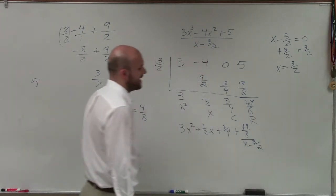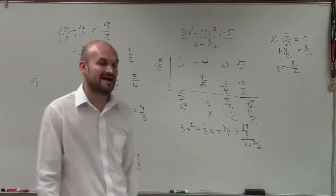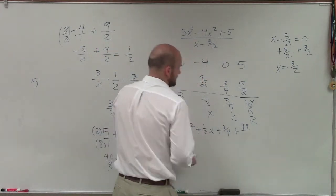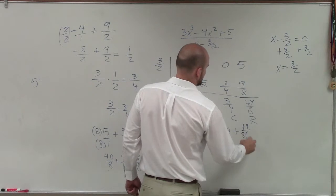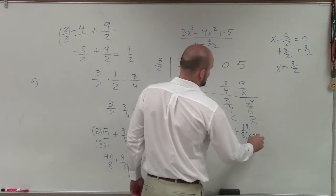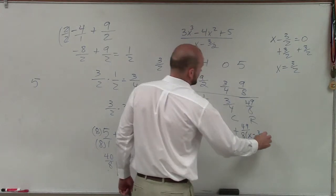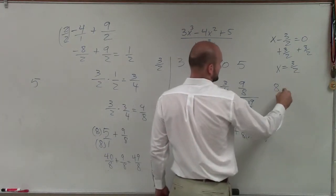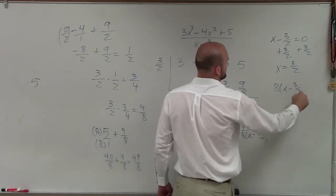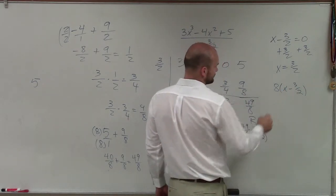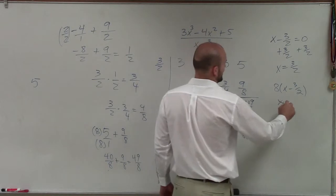Now we don't really want to have a fraction and another fraction. So what I can do is I can just rewrite this as 8 times (x - 3/2). And let's distribute that, 8 times x - 3/2. So therefore that's going to be 8x - 12.